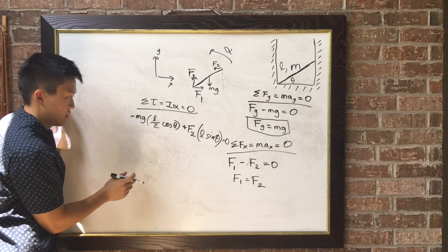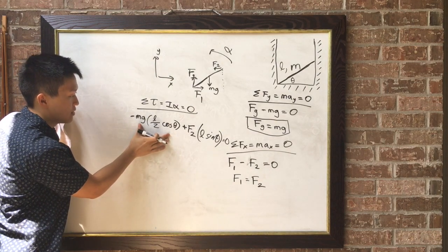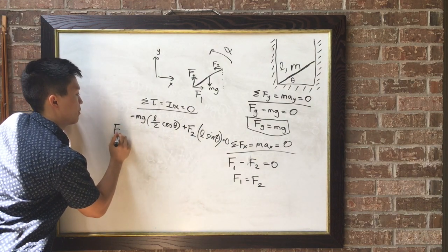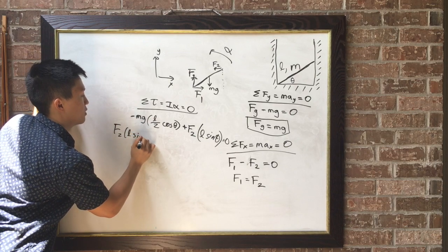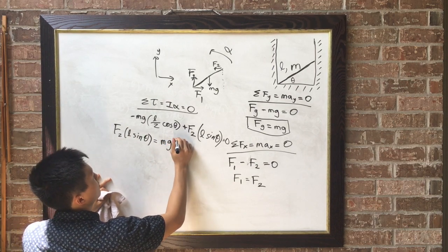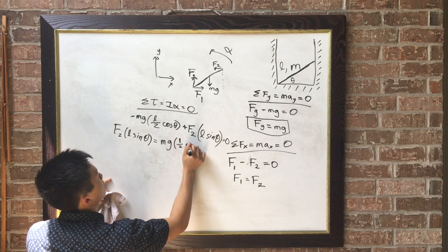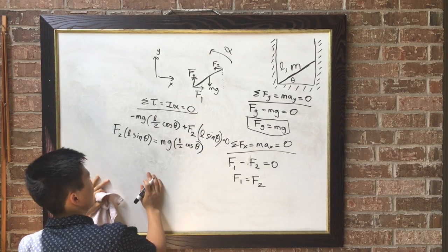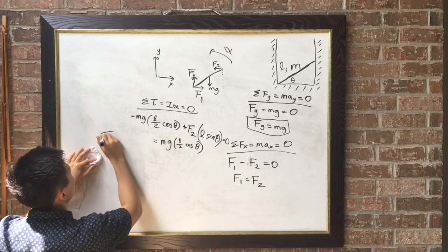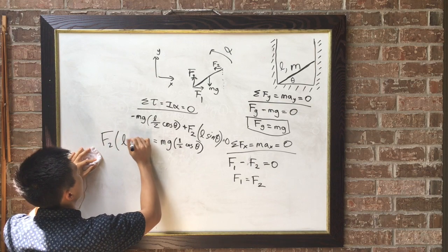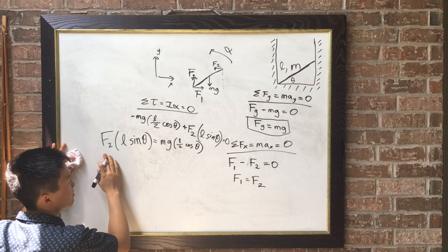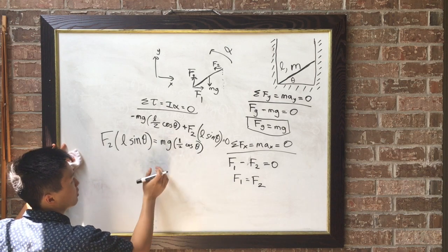Now let me rewrite this. I'm going to move this negative quantity to the right so everything is just positive. Now, here, let me rewrite this, since it's not very straight. Alright, now I can solve for F sub 2 by dividing both sides by L sine theta.